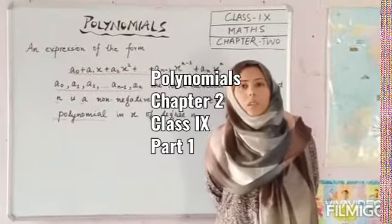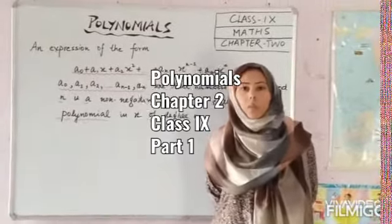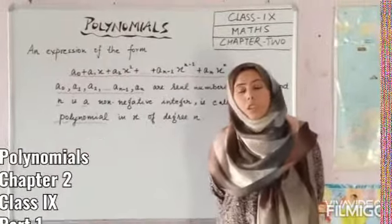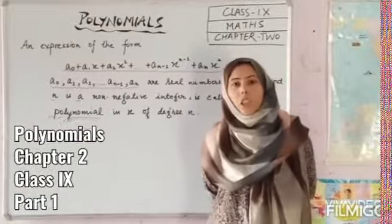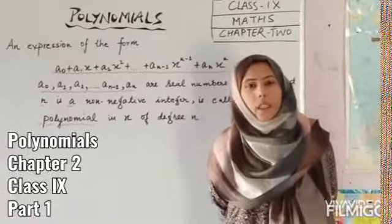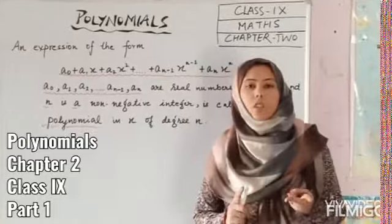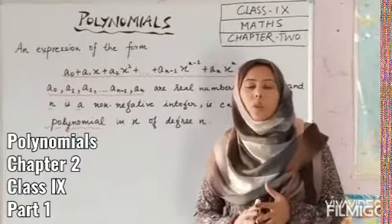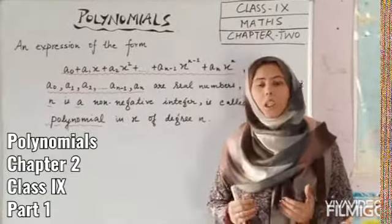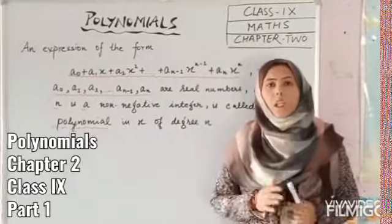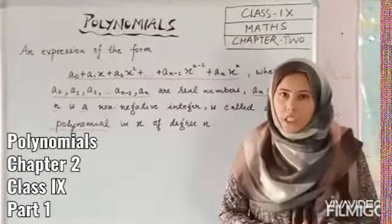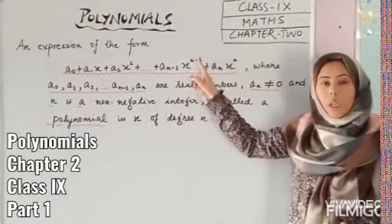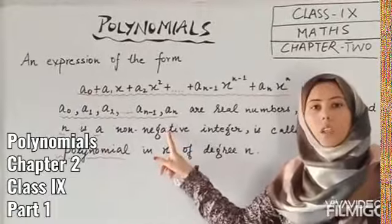Today we have to start with chapter number 2, that is Polynomials. Polynomials are a special type of algebraic expressions. You have studied algebraic expressions in class 8. In class 9, we will study about polynomials. They are a particular type of algebraic expressions in which the power of the variable is a non-negative integer.